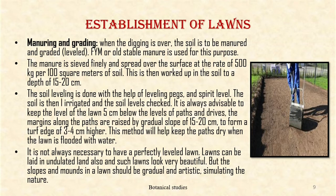Manuring and Grading: When the digging is over, the soil is to be manured and graded, i.e. leveled. Farm yard manure or old stable manure is used for this purpose. The manure is sieved finely and spread over the surface at the rate of 500 kg per 100 square meters of soil, then worked into the soil to a depth of 15 to 20 cm. The soil leveling is done with the help of leveling pegs and spirit levels. The soil is then irrigated and the soil levels checked. It is always advisable to keep the level of lawn 5 cm below the level of paths and drives.